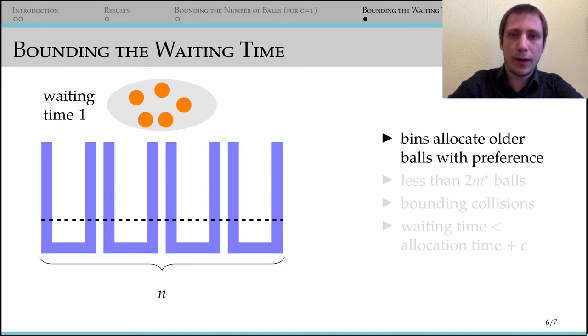And since we know with high probability that in any given round t there are no more than 2m-star balls, the problem can be reformulated as how long until 2m-star balls are gone.